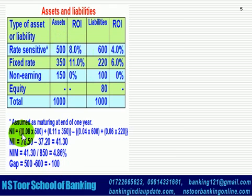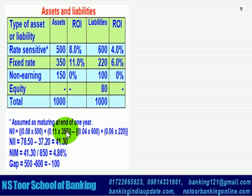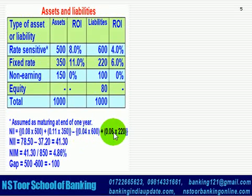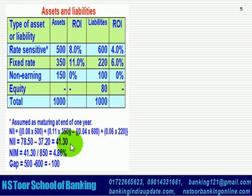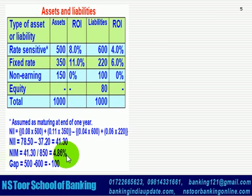Net Interest Income is calculated as interest earned on assets minus interest paid on liabilities. Interest earning on assets is 78.50 (500 × 8% plus 350 × 11%), and interest payment on liabilities is 37.20, giving Net Interest Income of 41.30. Net Interest Margin is 41.30 divided by 850, which equals 4.86%.